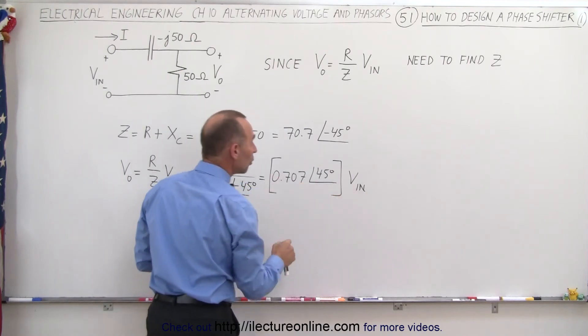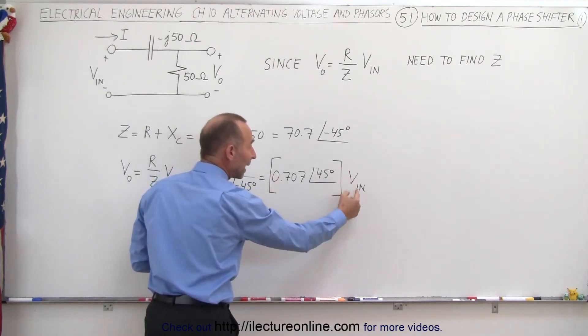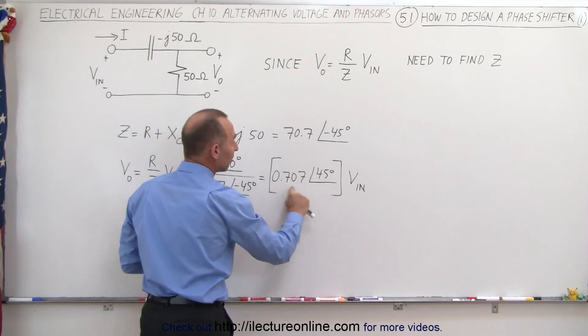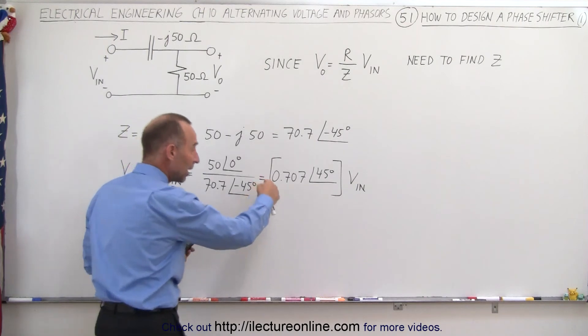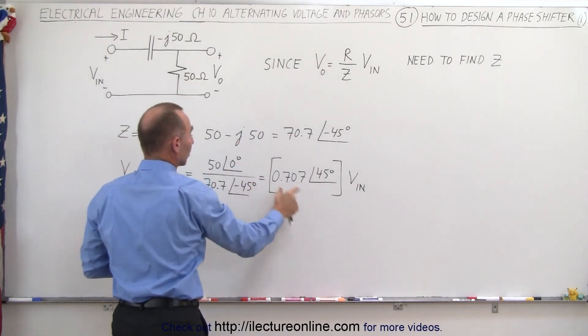Now also notice that the input voltage magnitude has now been reduced by 0.707, so we have a reduction in the output voltage because of this, the way the circuit is laid out, but we have a phase shift difference of 45 degrees.